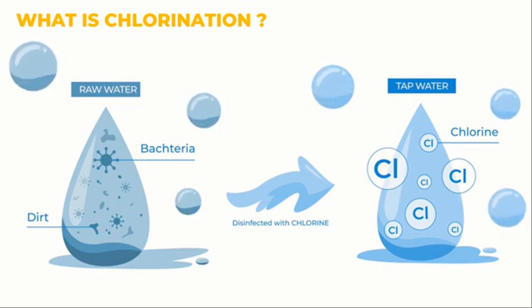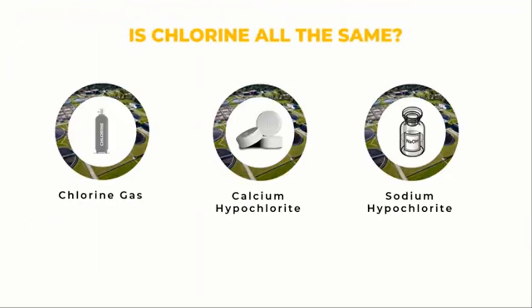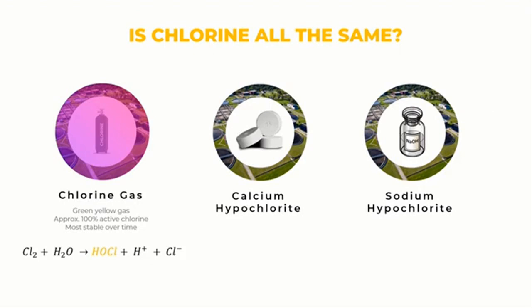Chlorine gas, sodium hypochlorite, and calcium hypochlorite are the three forms of chlorine most frequently used to treat water. Chlorine gas is greenish-yellow in hue and heavier than air. Due to the chemical changes that take place when it is added to water, its high toxicity makes it an excellent water disinfectant, but also a danger to anyone who handles it. When used to purify drinking water, chlorine gas is no more hazardous to people than other forms of chlorine. The most popular form of chlorine for municipal water systems is chlorine gas, which is actually sold as an amber-colored compressed liquid.